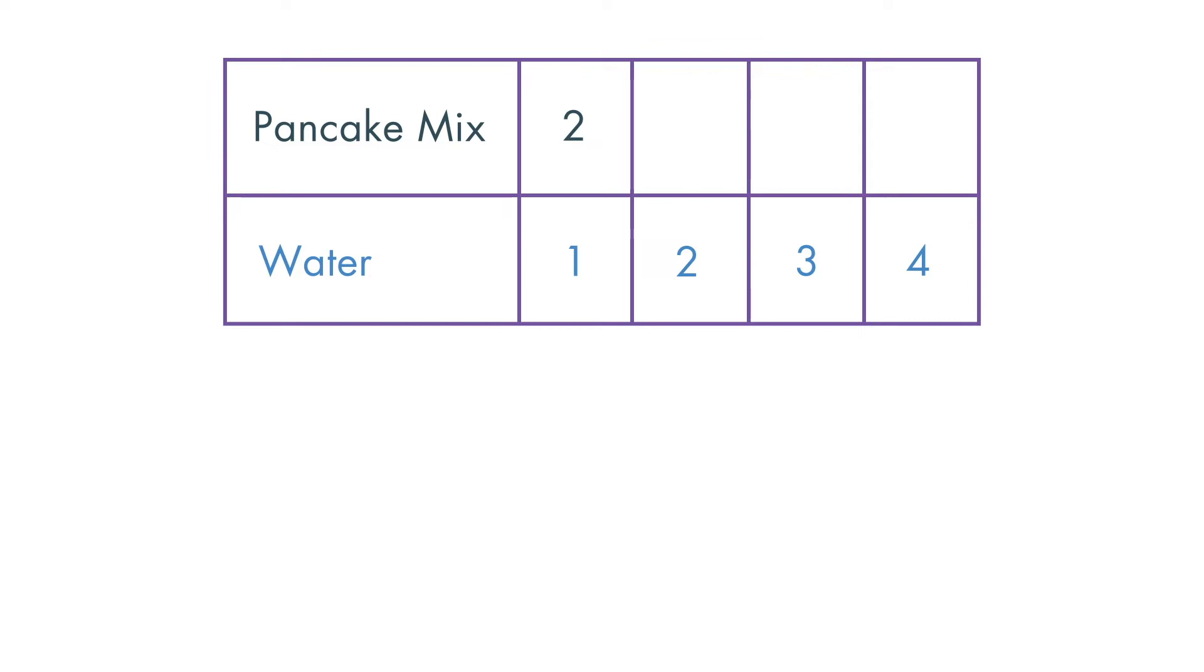We can use a table to find how much mix to use to make bigger batches of pancakes. For every cup of water, we will use 2 cups of pancake mix.